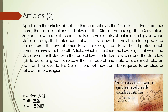正常速度. Apart from the articles about the three branches in the Constitution, there are four more that are: relationships between the states, amending the Constitution, supreme law, and ratification. The fourth article talks about relationships between states and says that states can make their own laws, but they have to respect and help enforce the laws of other states. It also says that states should protect each other from invasion. The sixth article, which is the supreme law, says that when the state law is conflicted with the federal law, the federal law wins and the state law has to be changed. It also says that all federal and state officials must take an oath and be loyal to the Constitution, but they can't be required to practice or take oaths to a religion.